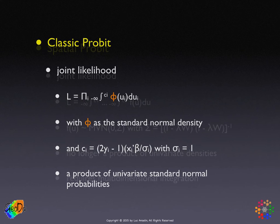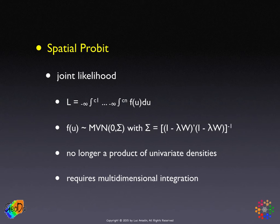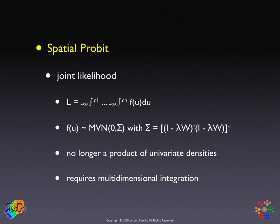In contrast, in the spatial probit, we have to deal with the whole full joint distribution. The reason for that is the dependence induced by the spatial autocorrelation. So instead of a nice product of univariate densities, we have an evaluation of an n-dimensional multivariate normal density. It cannot be emphasized enough what a difference this is — in the standard case we simply deal with univariate densities, which is easy. In the spatial case, we need to evaluate the full n-dimensional integral for all the bounds at each observation.